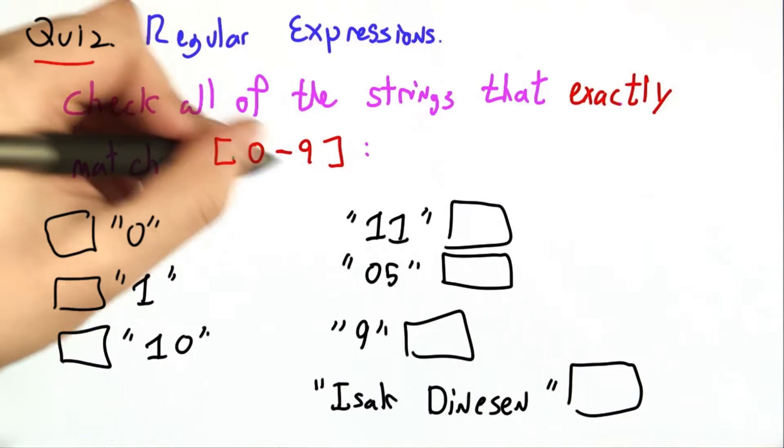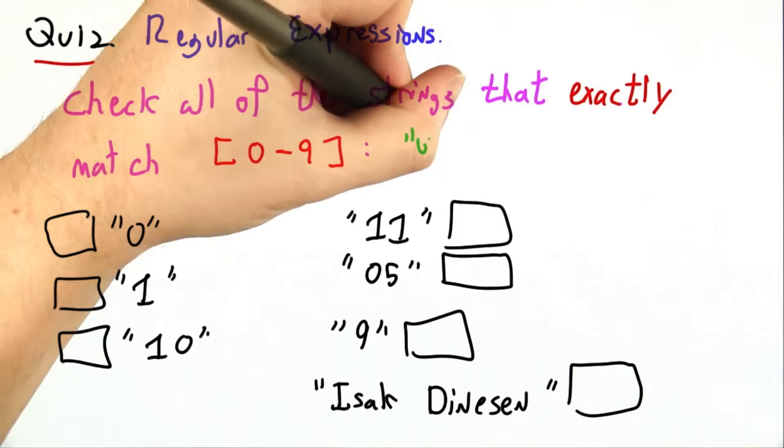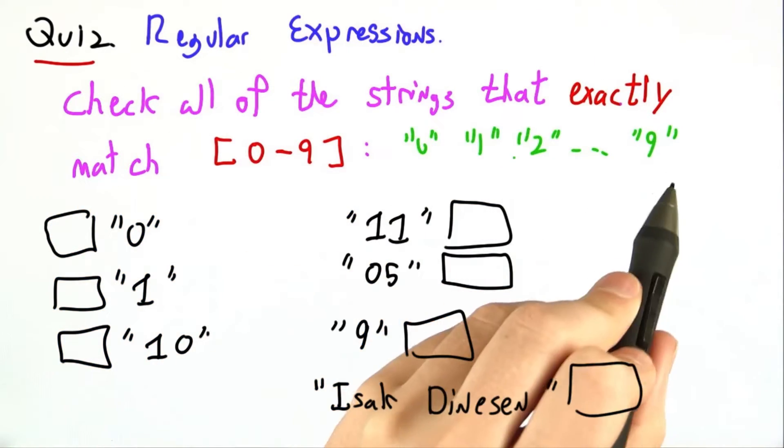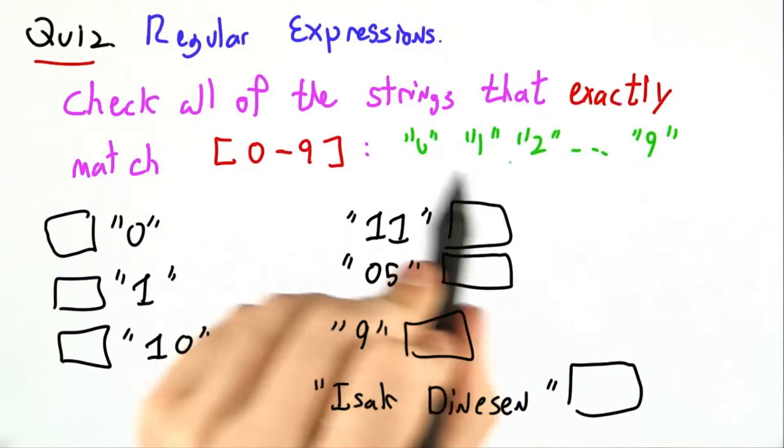One way to reason about this is just to write out all of the strings that this matches. 0, 1, 2, all the way up to 9. 10 different one-digit strings.